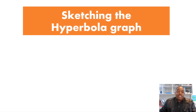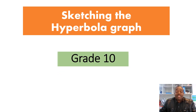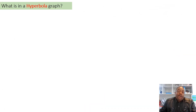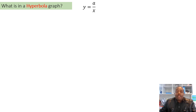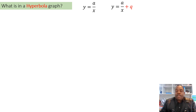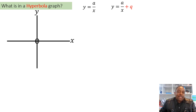Let's have a look at sketching the hyperbola graph at the grade 10 level. You need to know what elements are in a hyperbola graph so that when you're sketching you show what is expected. A graph at its original position has the form y = a/x, but if the graph is shifted, it takes the form y = a/x + q.